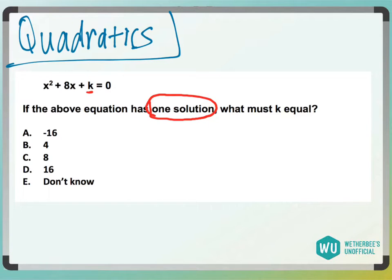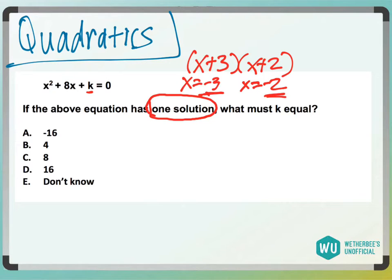So let's put up a quadratic that has two solutions. Let's say I have x plus 3 times x plus 2. What are my solutions here? x is negative 3, and x is negative 2. These are two solutions. Negative 3 and negative 2 are two distinct solutions.